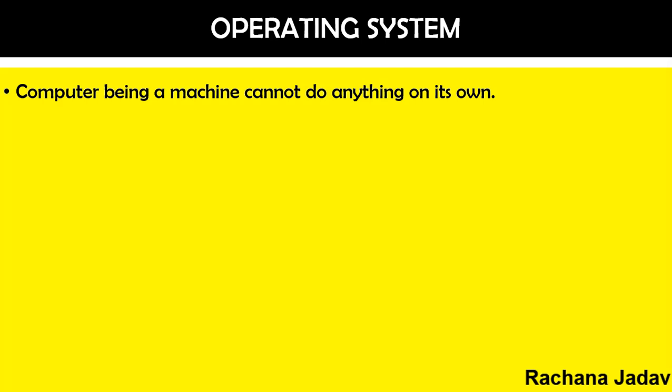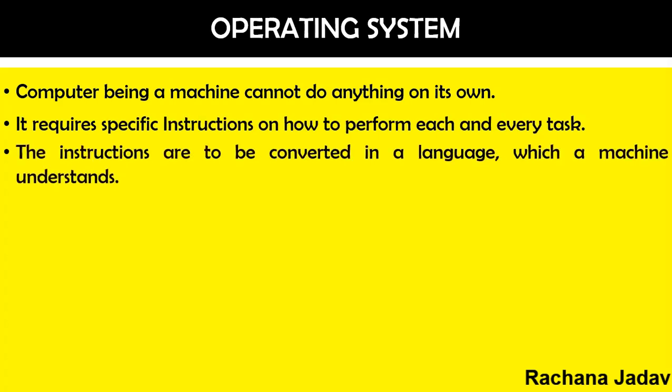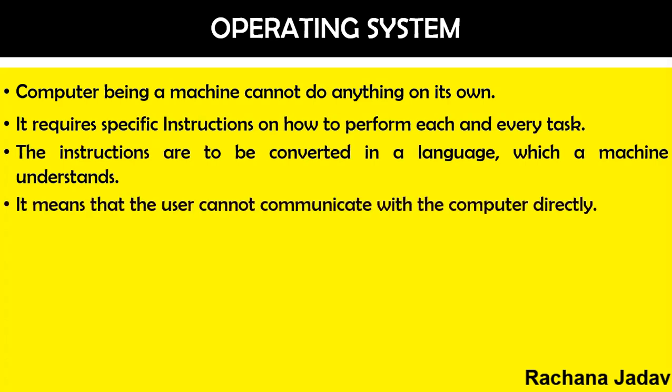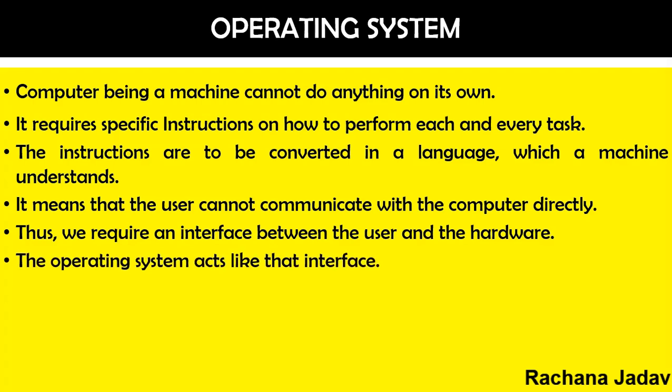The operating system — a computer being a machine cannot do anything on its own. To perform tasks, it needs specific instructions, and for that we need a language that is machine language, which the computer understands. It understands that language and binary language. For that, we need an interface between the user and the hardware, and that is the operating system.